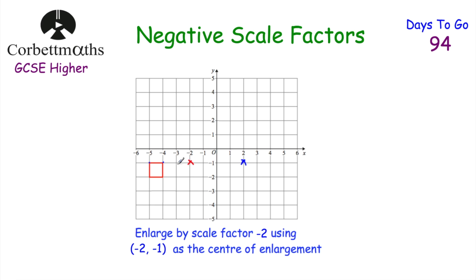For the next point, it's 3 to the left from the centre — doubling and reversing direction gives 6 to the right. For the third point, it's 2 to the left and 1 down — doubling and going the opposite way gives 4 to the right and 2 up. For the final point, it's 3 to the left and 1 down — so we go 6 to the right and 2 up. Joining those points gives the enlarged square — scale factor -2 with centre (-2, -1).